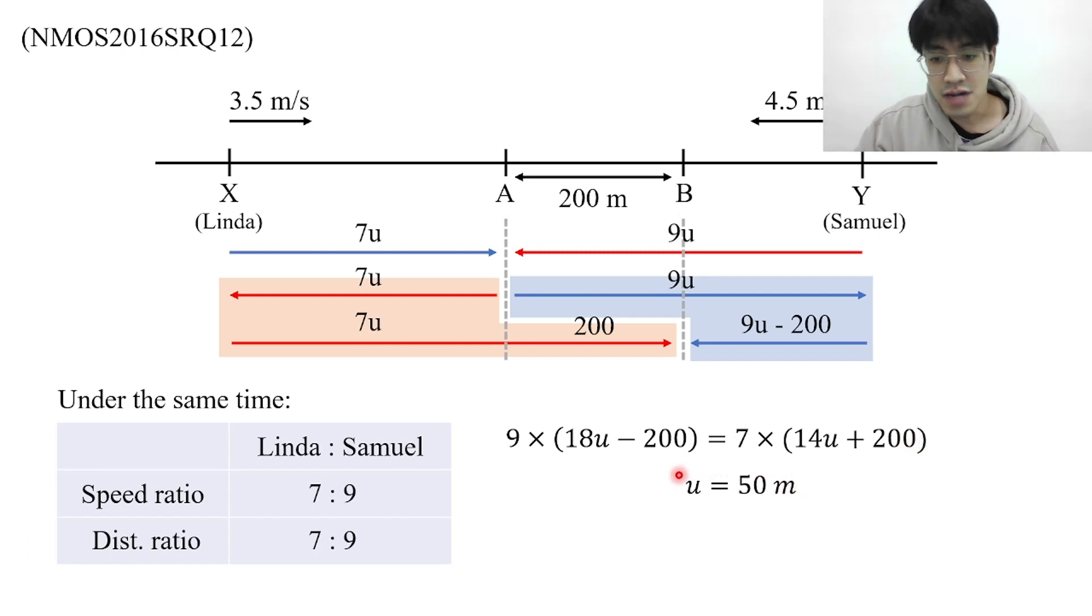Having found that u equals 50 meters, how am I going to find the total distance between X and Y? We know that this distance is 7u and this distance is 9u, so the entire distance between X and Y will be 7 plus 9 which is 16u. With u equals 50 we find that the total distance between X and Y is just 800 meters. And there you go, we have solved this travel problem from the NMOS special round 2016.